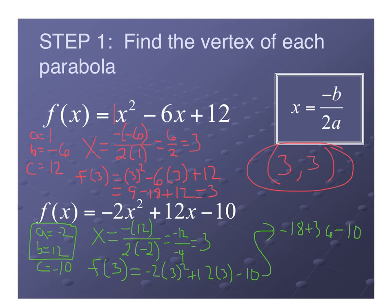Well, negative 18 plus 36 gives me positive 18. Positive 18 minus 10 would give me positive 8. So my ordered pair would be (3, 8) for my vertex. Bada boom, bada bang, we're done.